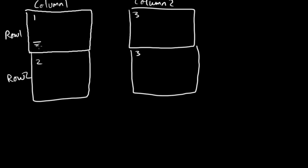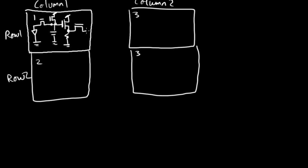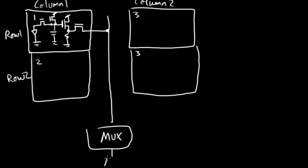Every single pixel in this array is going to have that 4T arrangement — the 4 transistor arrangement from the previous video. So it has a photodiode, a transfer gate, coming out to a reset gate, an integration capacitor, coming out to a source follower, the resistor of the source follower. And this is where the row select becomes important — there's the row select transistor, and then that comes out to a column bus, which comes down to a multiplexer and then an ADC.